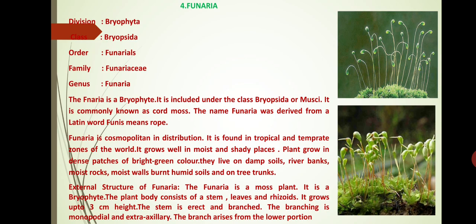Funaria is a moss plant; it is a Bryophyte. The plant body consists of stem, leaves and rhizoids. It grows up to 3 cm in height. The stem is erect and branched; the branching is monopodial and extra-axillary.